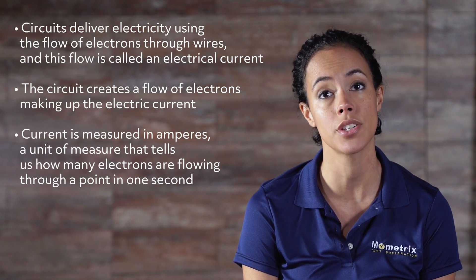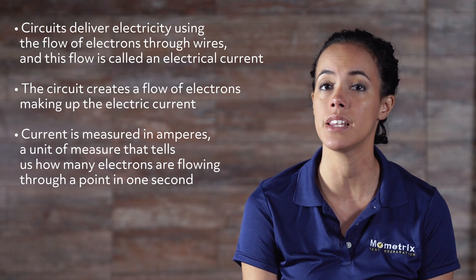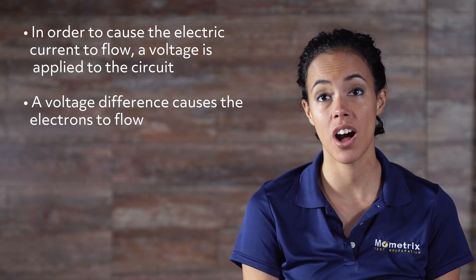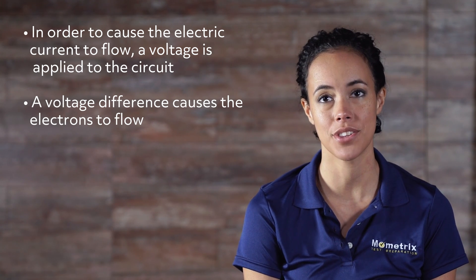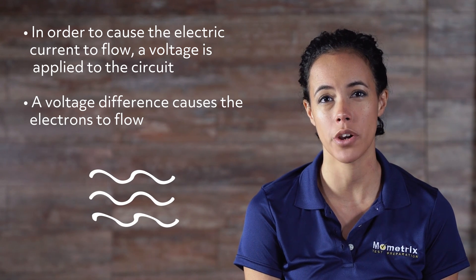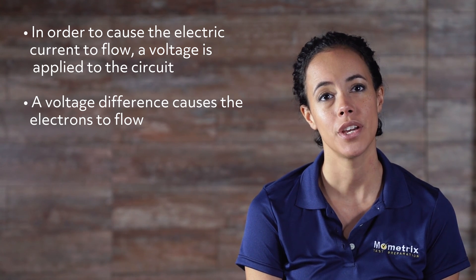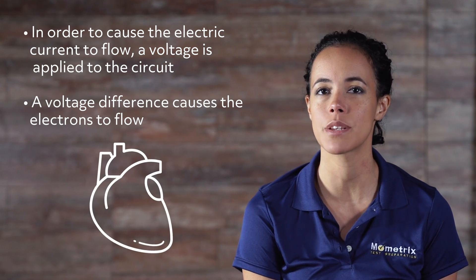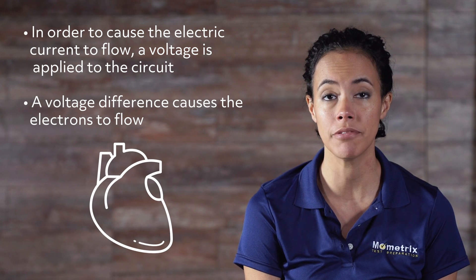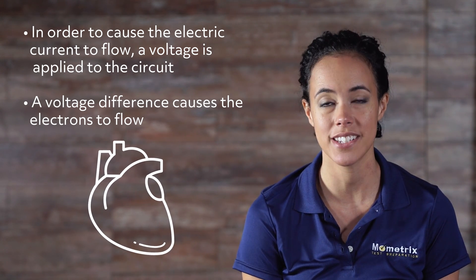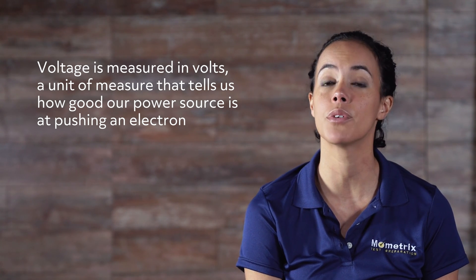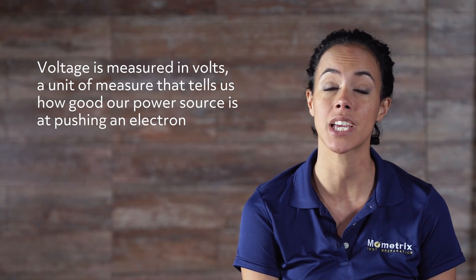Current is measured in amperes, which is a unit of measure that tells us how many electrons are flowing through a point in one second. In order to cause the electric current to flow, a voltage is applied to the circuit. A voltage difference causes the electrons to flow, just like a change in water pressure causes the water to flow. We can also think of voltage like the pulsing of your heart to push blood through your body. Your heart pushes on your blood to create blood flow, just like voltage pushes on electrons to create current. Voltage is measured in volts, a unit of measure that tells us how good our power source is at pushing an electron.